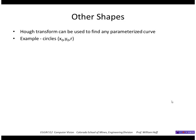I wanted to show how the Hough transform can find other shapes other than lines. In fact, it can be used to find any parameterized curve. For example, take circles. Circles are parameterized by the center of the circle x0, y0 and the radius r.